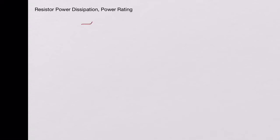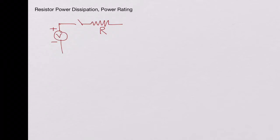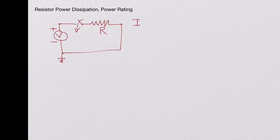Welcome to EE Know-How. In this video we will look at resistor power dissipation and power rating. Let's take a resistor whose resistance is R and connect it across a DC voltage source V, then close the switch. The voltage is dropped across the resistor and the current flowing through the circuit I is V over R.